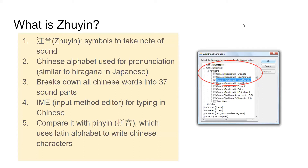Another word for Chinese phonics is called Zhuyin. Zhuyin means symbols that take note of sound — the zhu means description and the yin means sound. So a description of a sound will be like an alphabet. Zhuyin is a Chinese alphabet used for pronunciation, which is similar to hiragana in Japanese. It also breaks down all Chinese words into 37 sound parts, or 37 Zhuyin.